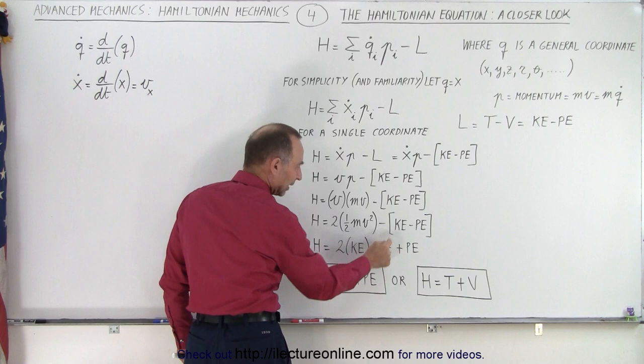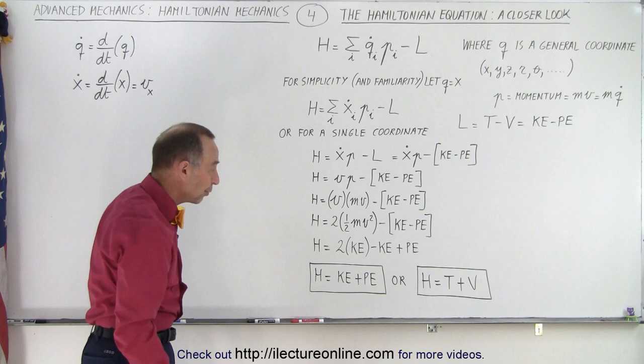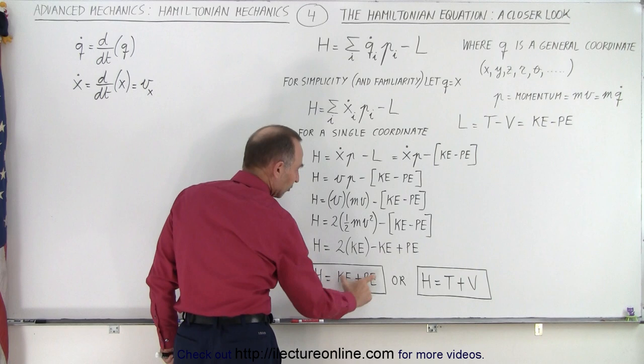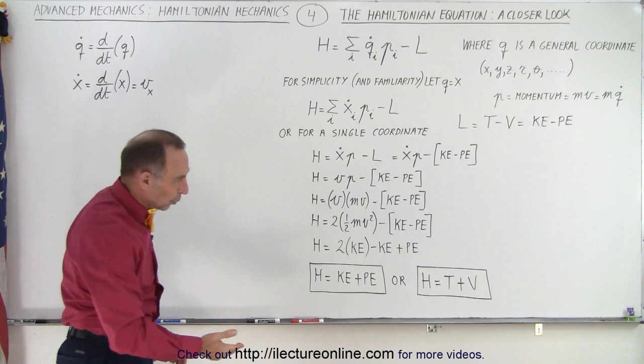Subtract from that kinetic energy, and minus times the minus means we're going to add the potential energy of the problem. So twice the kinetic energy minus kinetic energy gives you kinetic energy plus the potential energy, and that would then be the equation equivalent to the Hamiltonian.